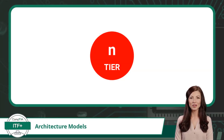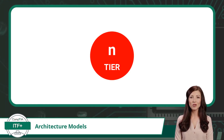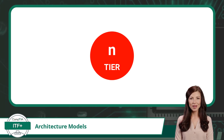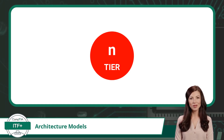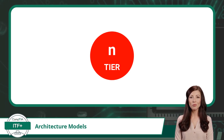Lastly, we have the n-tier architecture. The 'n' is meant to represent any number of tiers. Imagine a large corporation with several departments — each department has its specific tasks, and they collaborate when needed. In an n-tier architecture, we have multiple layers, each with a specific role and responsibility. These tiers can range from three to many, depending on the complexity of the application. This model provides the highest level of flexibility, making it ideal for complex applications.